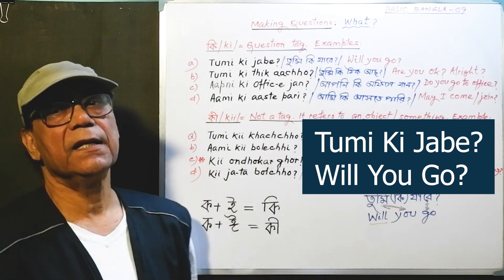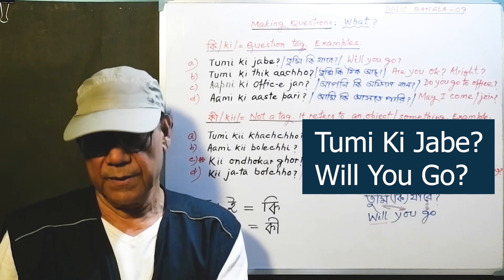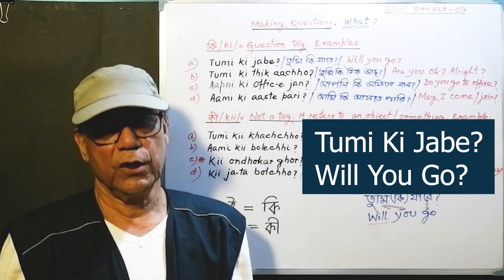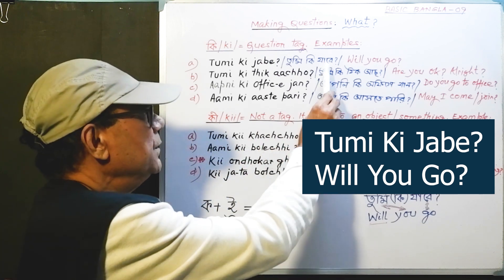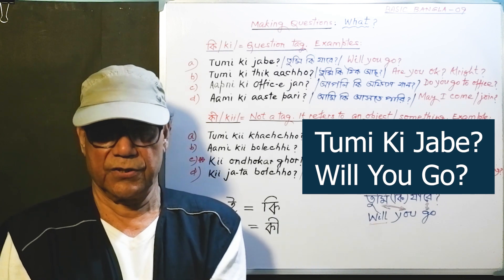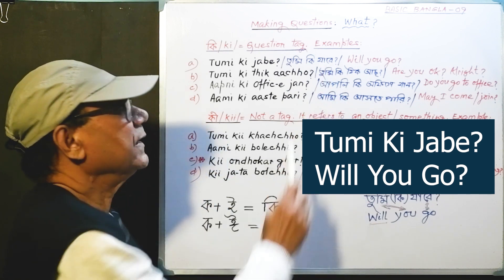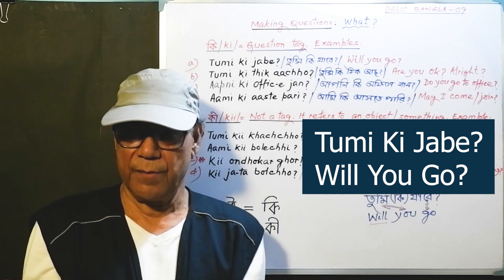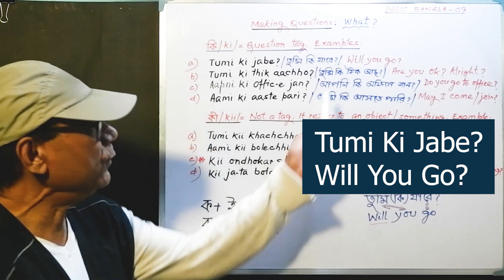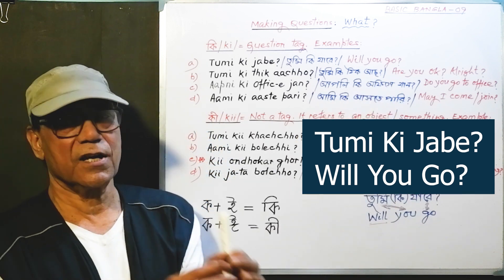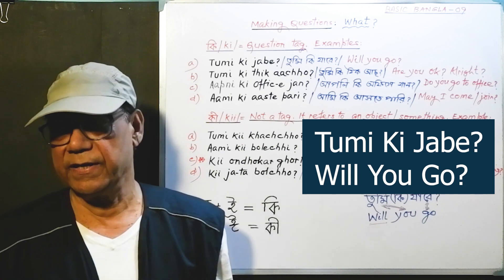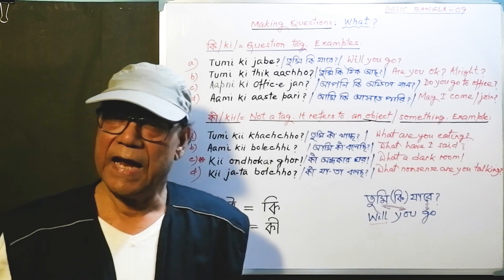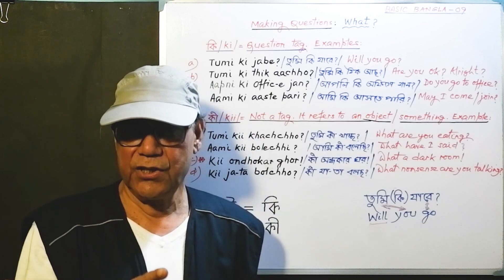In English, 'will' is an auxiliary verb, but in Bengali there is no auxiliary verb. When conjugated, the verb changes according to the requirement. So 'jabe' itself carries the future form. Ami jabo, tumi jabe, se jabe, etc. So 'will you go?' is translated as 'tumi ki jabe.' If the question is stressed on jabe, the meaning is 'will you go?'